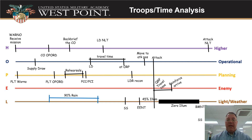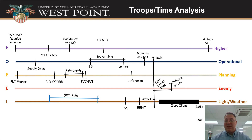Then we look at operational things: a supply draw, travel time, when I plan to cross the LD — my plan, earlier than the commander's no-later-than — how long it takes, when we hit the ORP, and when we move to attack positions. Planning things include when I'm putting out the warning order, when's my op order, time blocked off to write the op order, rehearsals, PCCs, and leaders' recon. I drew a big line down for the attack so I can see on every line exactly where that falls.